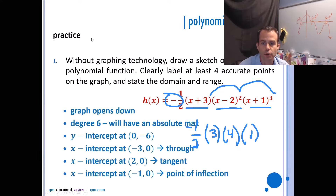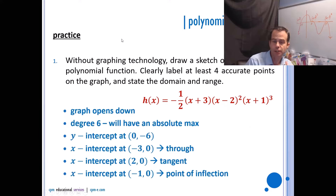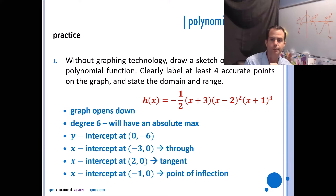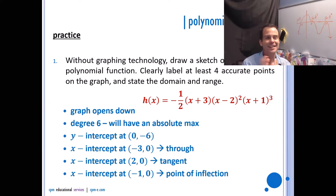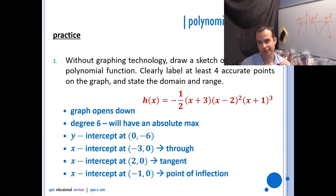The graph will open down, we have degree six, y-intercept at (0, −6), x-intercepts at (−3, 0), (2, 0), and (−1, 0). When speaking about an intercept, the word refers to coordinate pairs. You can't say 'I have a y-intercept at negative six' — you would say 'I have a y-intercept at (0, −6).' You have to be really careful in how you're communicating.